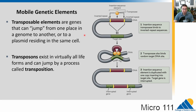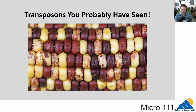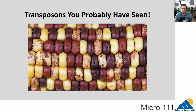You have probably seen the results of transposons. Indian corn has cells with and without pigment, creating a speckled appearance. This is the result of transposons: a transposon jumps into the pigment gene in some cells, disrupting it and stopping pigment production. That's why some kernels are white and others are pigmented — in some cells the transposon jumped and in others it didn't.